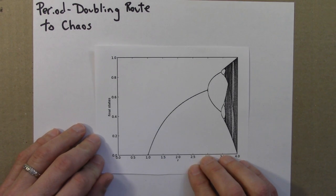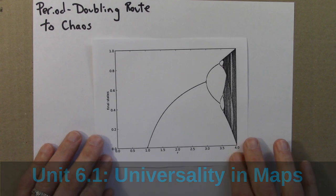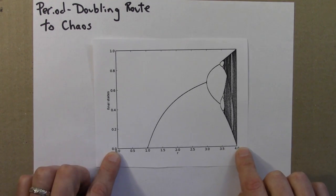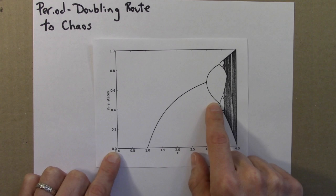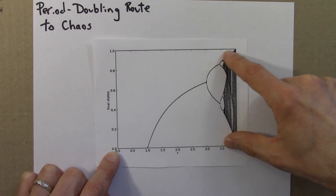In this lecture, we'll examine the period doubling route to chaos in the logistic equation in considerable detail. So here's the bifurcation diagram for the logistic equation. R goes from 0 to 4. Period 1 goes to period 2 to 4 and so on, and then all this interesting behavior in here.